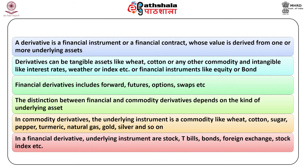In commodity derivatives, the underlying instrument is a commodity like wheat, cotton, sugar, pepper, turmeric, natural gas, gold, silver and so on. In financial derivatives, underlying instruments are stocks, T-bills, bonds, foreign exchange, stock index, etc. Derivative markets originated in commodities in the USA primarily for price discovery and hedging for agriculturists. Later on, the market for financial derivatives like stocks, bonds and currencies developed.